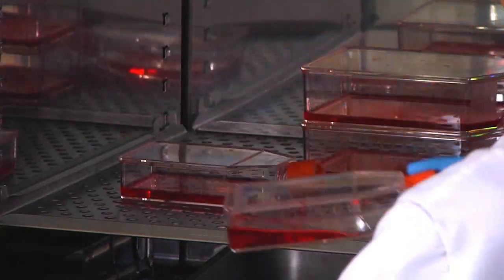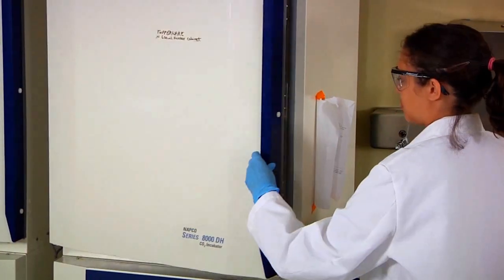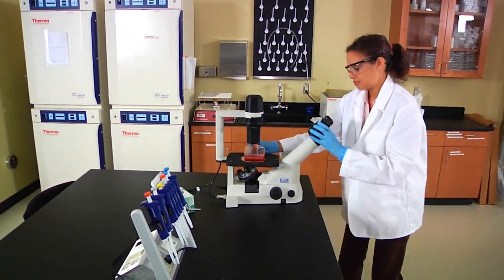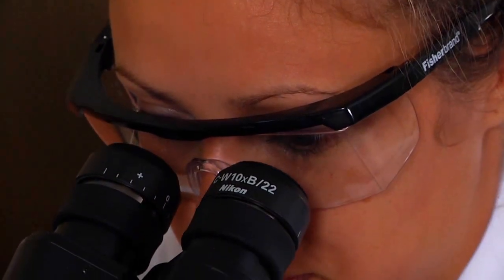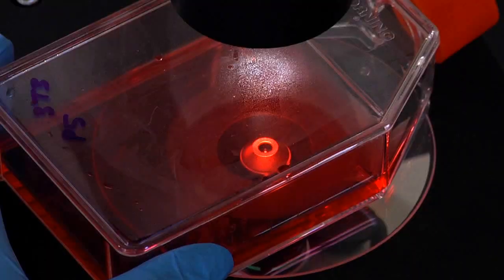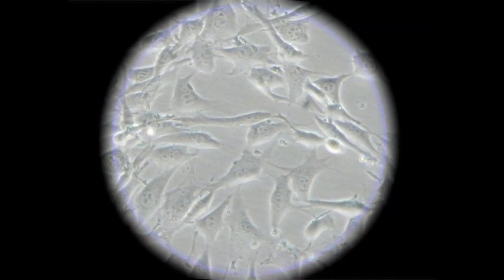Visually inspect the cells for a change in pH, which can be detected by a discoloration of the indicator phenol red. Examine the cell culture under an inverted microscope. Look for any signs of contamination or unhealthy cells. These cells look healthy.